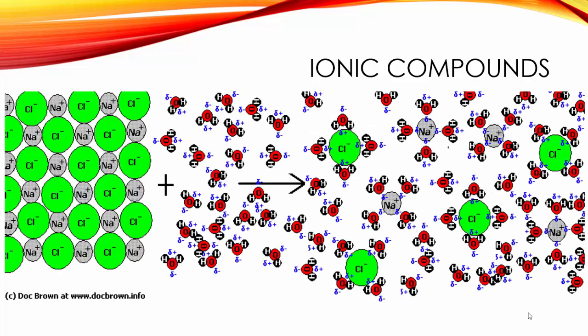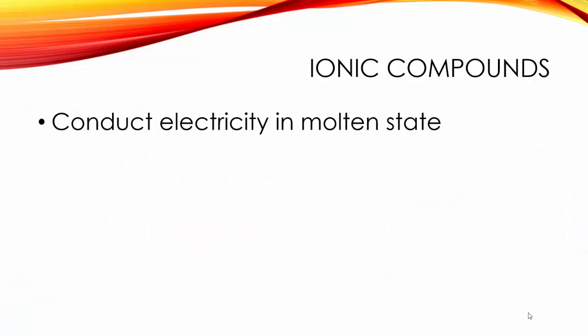What happens is the tight packed solid ions get surrounded by the water and separated. You can see that the charged particles can move around and that would allow for the conduction of electricity. Ionic compounds will also conduct electricity in the molten state when they're melted but they won't do it when they are solid.